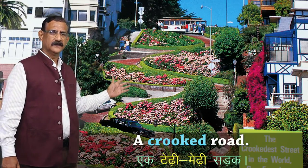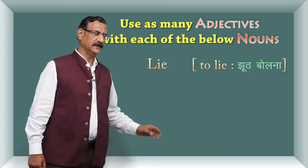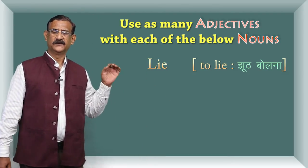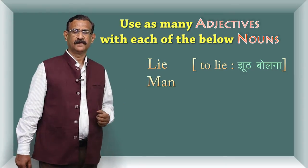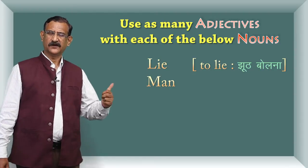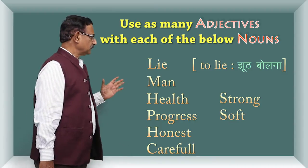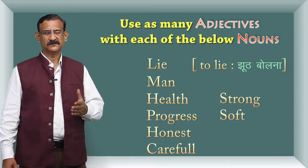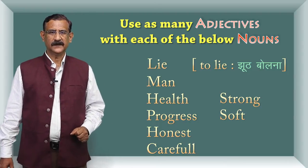To aise aap kuch aur shabd dekhiye — lie ke saath kya kya, lie mane jhoot bolna — usme kya kya shabd aayenge, kam se kam teen adjective usme aa sakta hai, khojiye. Man — kaisa man — kitne adjective man ke saath daal sakti hain? Health — swasth — kitne adjective aap swasth ke saath daal sakti hain? Progress — how many adjectives you can use for the word progress? Next is honest.